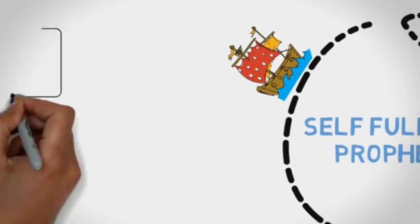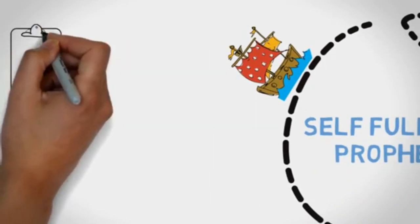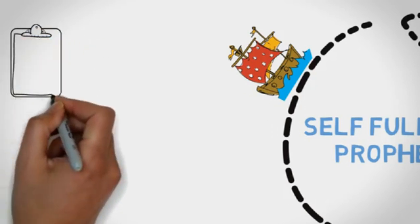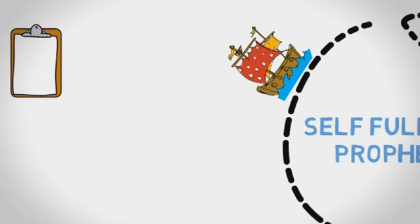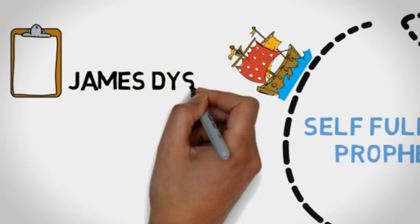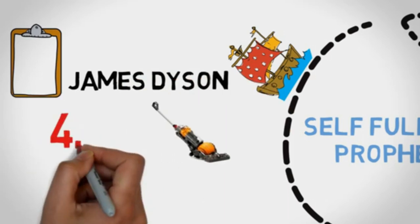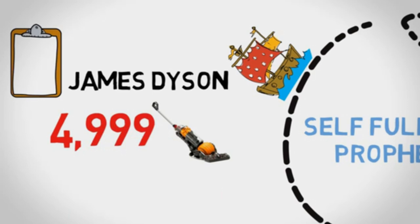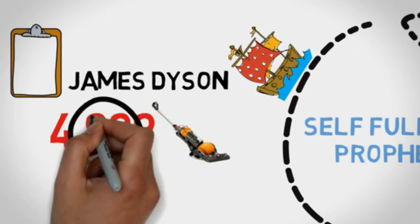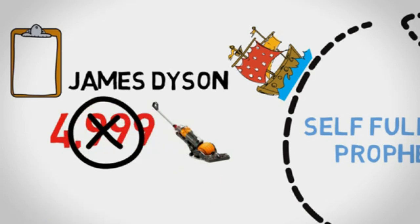Now here are a few examples of a positive perspective, mindset, framing, whatever you want to call it. James Dyson, the inventor of the world famous Dyson Hoover, tested about 5000 prototypes. That means 4999 failures he had to pick himself up from.